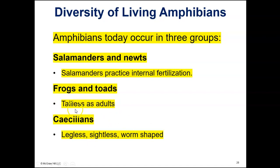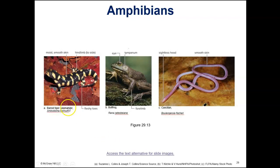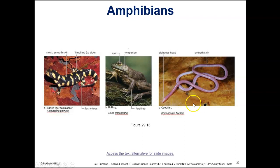Frogs and toads do not have tails. Caecilians don't have legs, and they're blind. Here we have a salamander, a frog, and a caecilian — which looks like a worm, but is not.